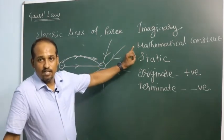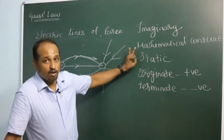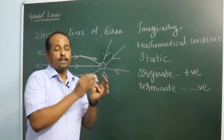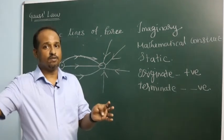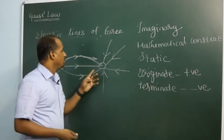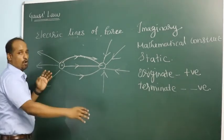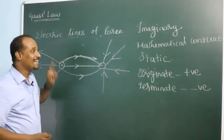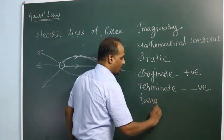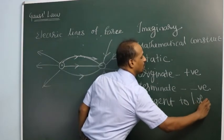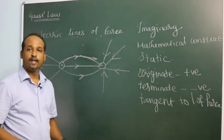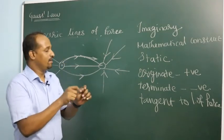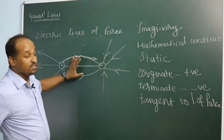Lines of force are imaginary, they are a mathematical construct, they are static and not flowing. Lines of force originate from a positive charge and terminate at a negative charge. If only a positive charge exists, lines go radially outward to infinity. The direction of the electric field at a point is a tangent to the line of force at that point.